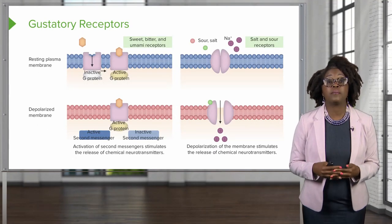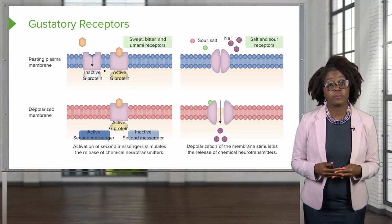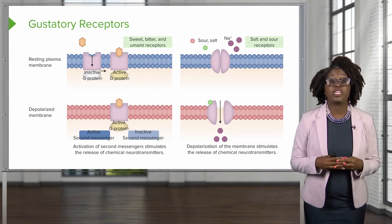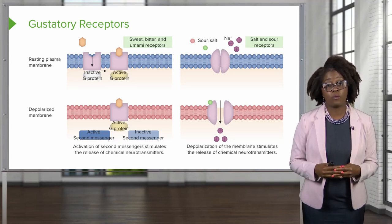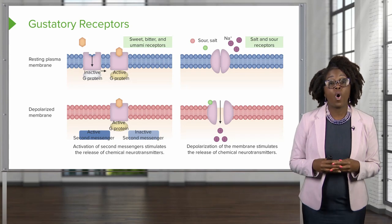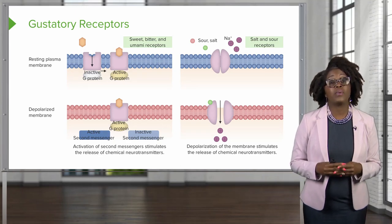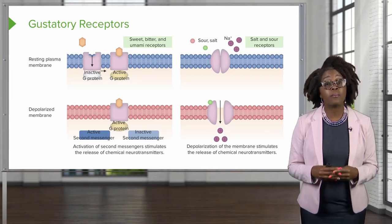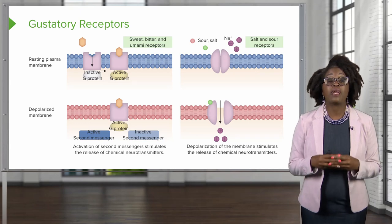Tastants are going to stimulate the gustatory receptor cells at the microvilli found at the top of the taste pore. Receptor potentials can arise from multiple routes. One way is when a tastant enters directly into the receptor cell — this happens with the salty taste as well as the sour taste, where sodium or H-plus ions enter into the gustatory cells. Another way is when a tastant binds to a G-protein coupled receptor in the membrane of the gustatory receptor cells, which is how we taste sweet, bitter, and umami.